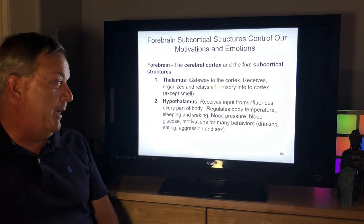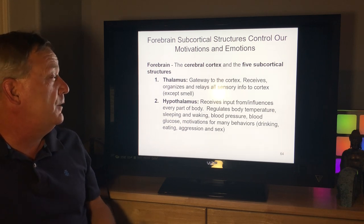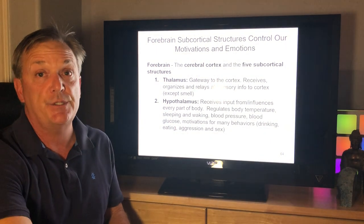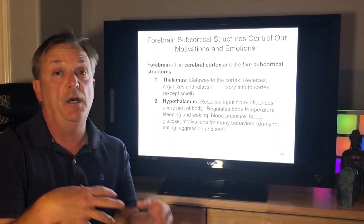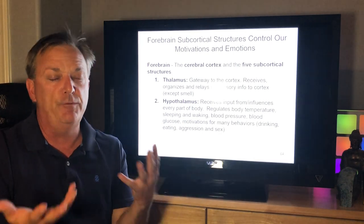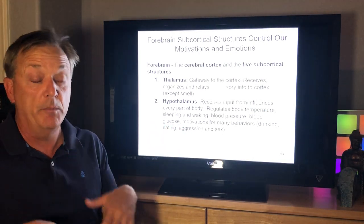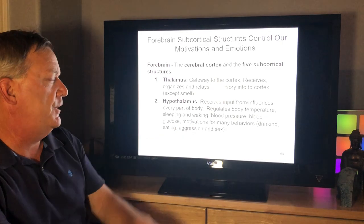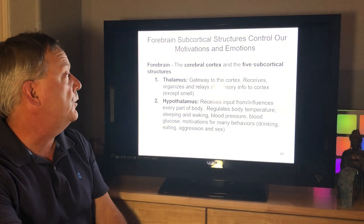The hypothalamus receives input from and influences really every part of the body — it's very small but has a huge influence. It regulates body temperature, sleeping and waking, blood pressure, blood glucose level, and motivations for many behaviors including eating, drinking, aggression, and sex. It also influences the sympathetic and parasympathetic nervous systems through hormones, and sits next to glands like the pineal gland that send signals to other glands — which you'll read about later with the endocrine system.